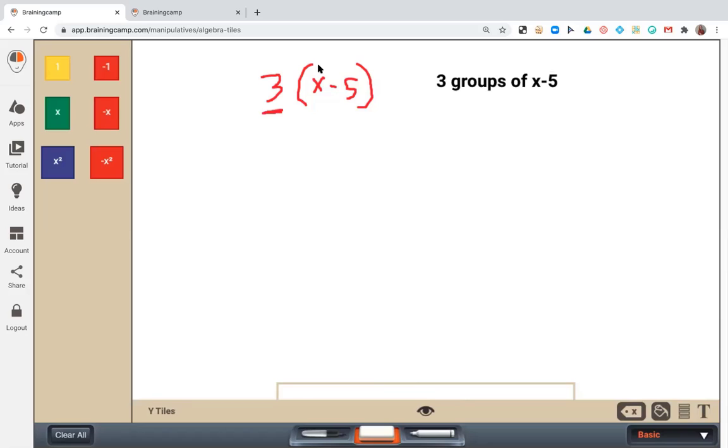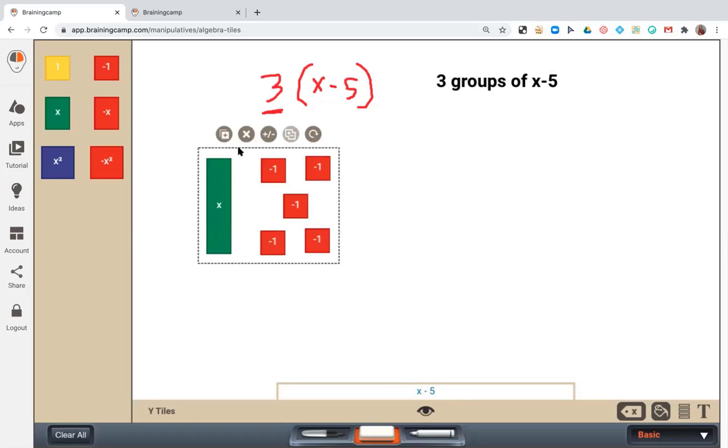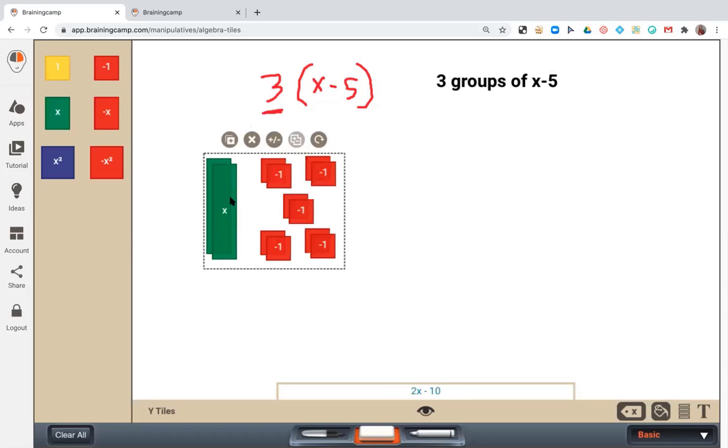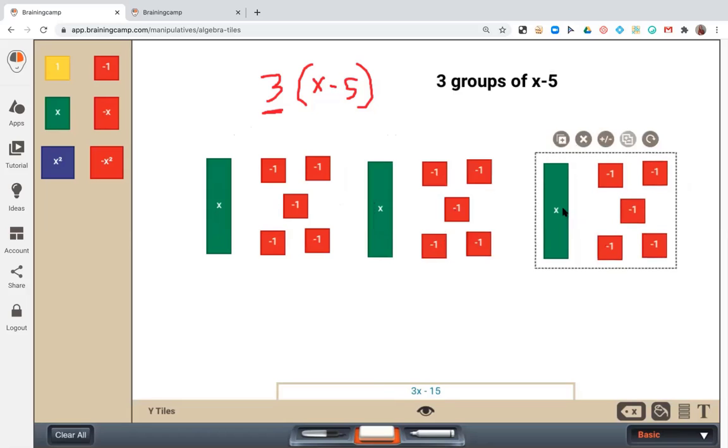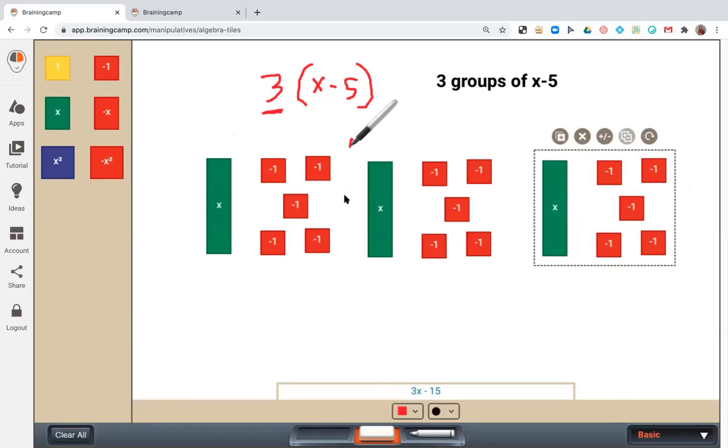So let's build it using our algebra tiles. There's one group, but I need 3 groups of x minus 5. 1, 2, 3. And I can circle my groups or separate them.